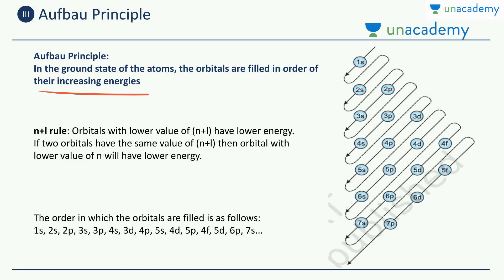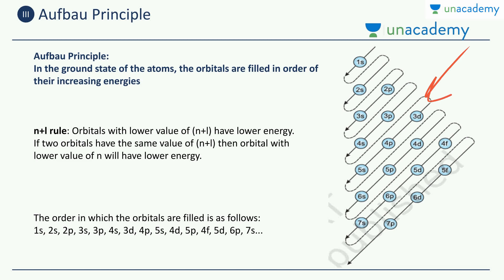Whenever you want to find the electronic configuration of an atom, you need to know how many electrons are present in which orbital. To find the electronic configuration, you start filling electrons in the order of increasing energies. That is why the increasing energies of the orbitals are so important. Let's look at the Aufbau diagram now.